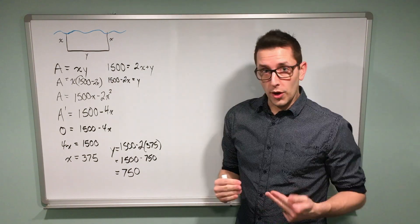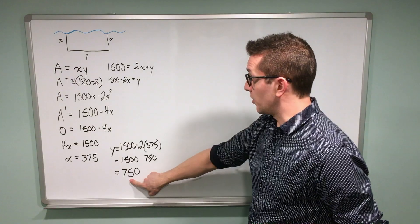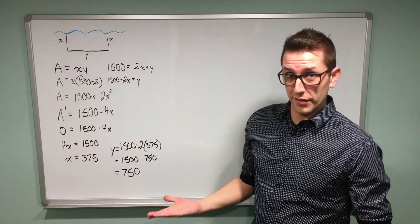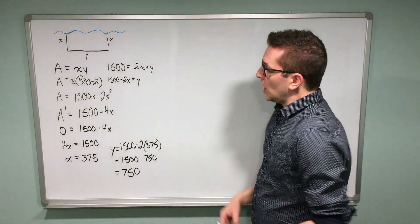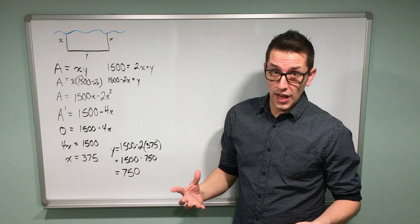If I wanted to find the maximum area possible, I could just multiply 375 times 750, because I'm working with area of a rectangle. I'm not going to do that in this problem. Because at this point, what I've done is I've successfully applied calculus to find the dimensions that maximize the area.